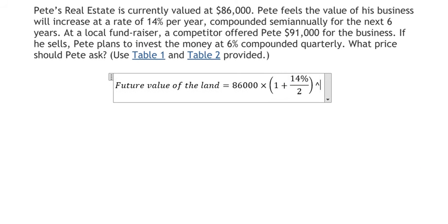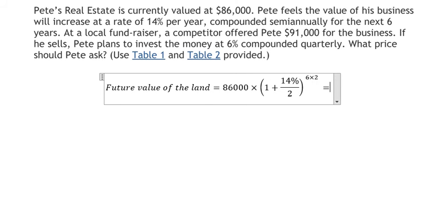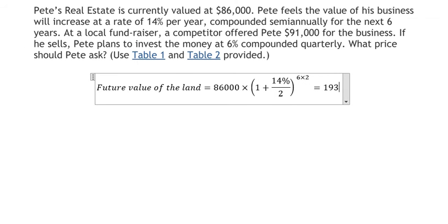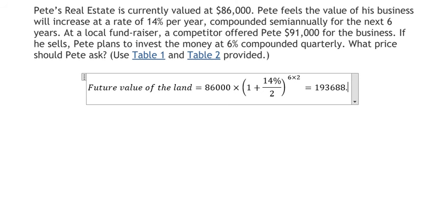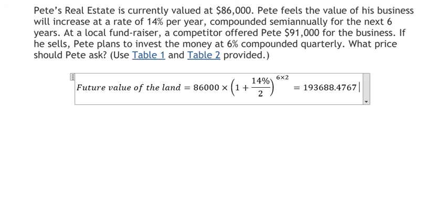The number of years is 6, but we need to multiply by 2 because we have semi-annual compounding. When we calculate, the future value equals $193,688.4767.